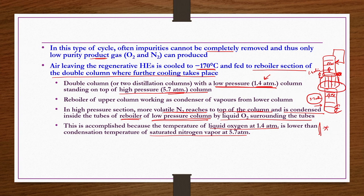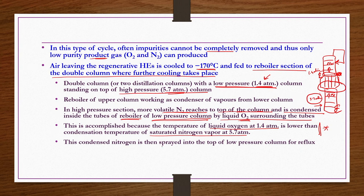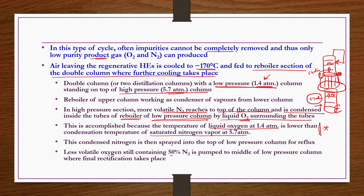For the top column it operates as a reboiler; for the bottom column it operates as a condenser. The nitrogen gets saturated due to this pressure difference, is condensed in the reboiler of the low pressure top column, and the surrounding tubes are occupied by liquid O2. This condensed nitrogen is then sprayed into the top of the low pressure column for reflux. Less volatile oxygen, still containing 50 percent N2, is fed to the middle of the low pressure column where final rectification takes place.